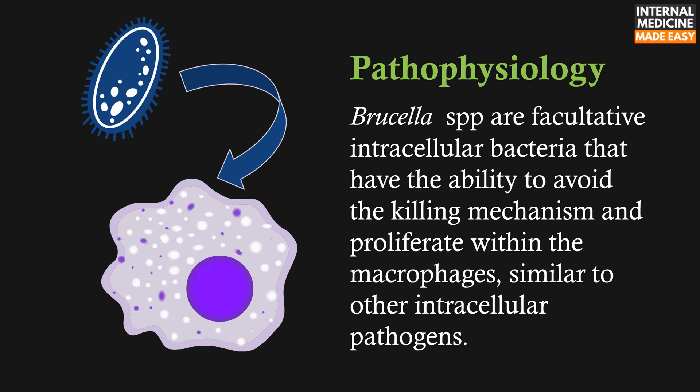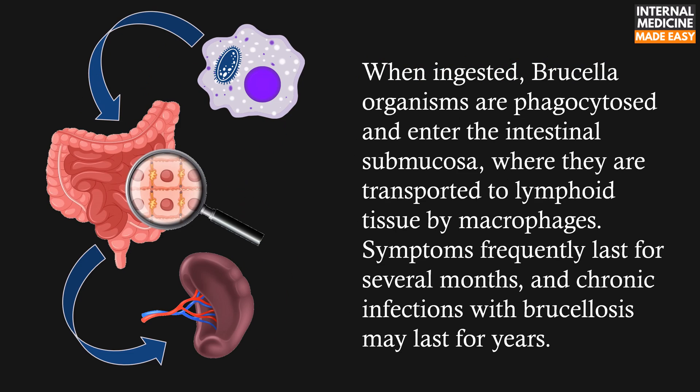Brucella species are facultative intracellular bacteria that have the ability to avoid the killing mechanism and proliferate within the macrophages, similar to other intracellular pathogens. When ingested, Brucella organisms are phagocytosed and enter the intestinal submucosa where they are transported to lymphoid tissue by macrophages.